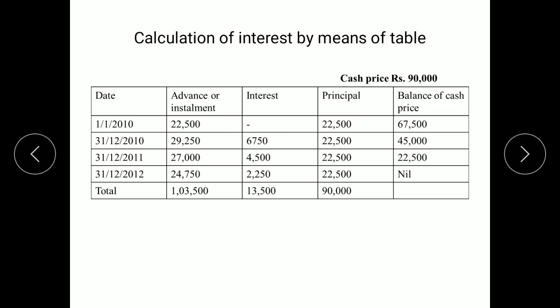For the next year, interest is calculated on 45,000, which comes to 4,500. So the total payment = 22,500 plus 4,500 = 27,000. Similarly calculated for the remaining year. Total principal is 90,000, total interest payment is 13,500, and the total payment made by the Hire Purchaser is 1,03,500. This is the Hire Purchase price, which equals interest amount plus principal amount.